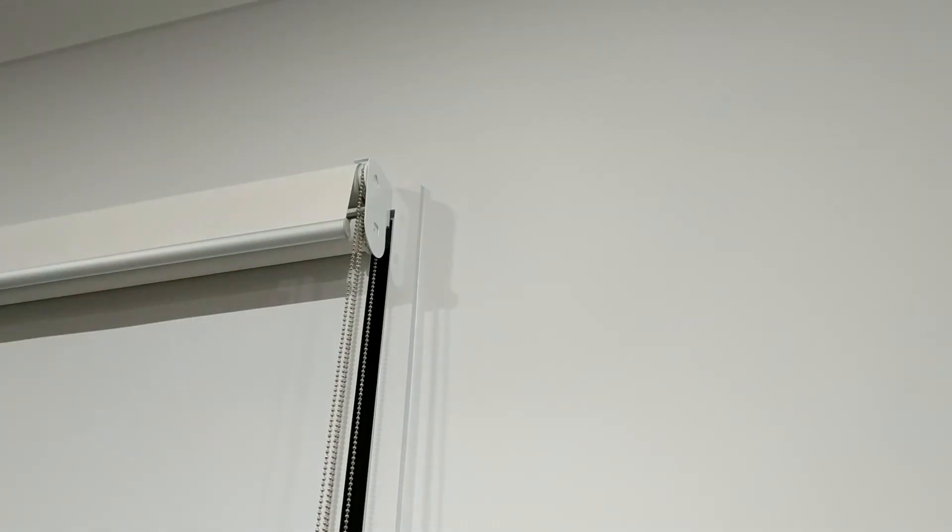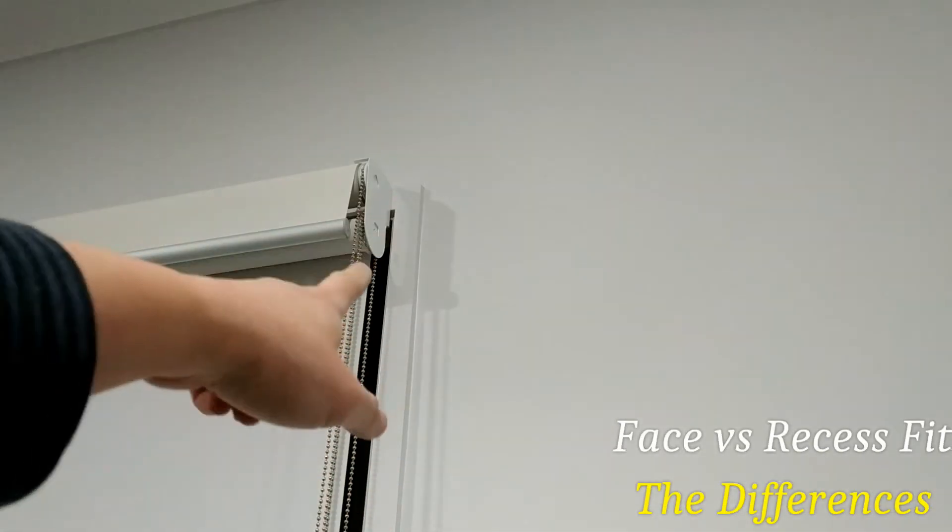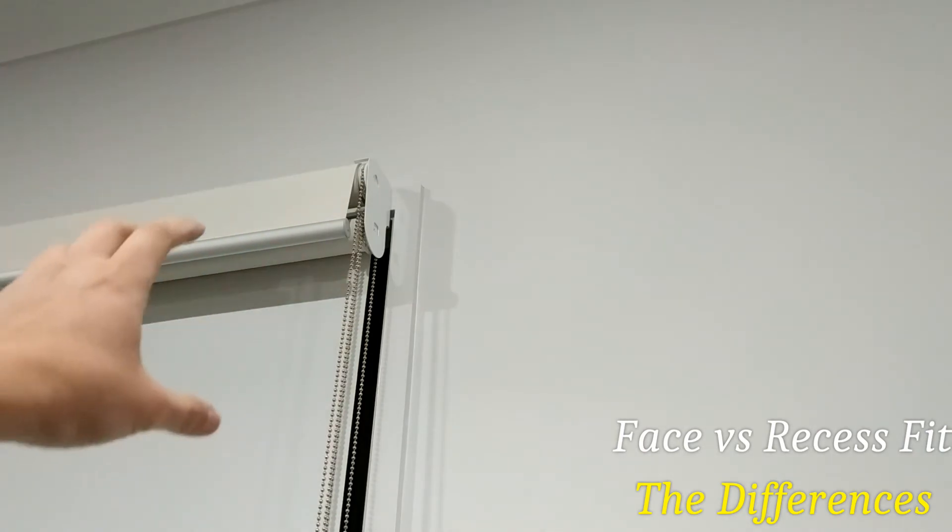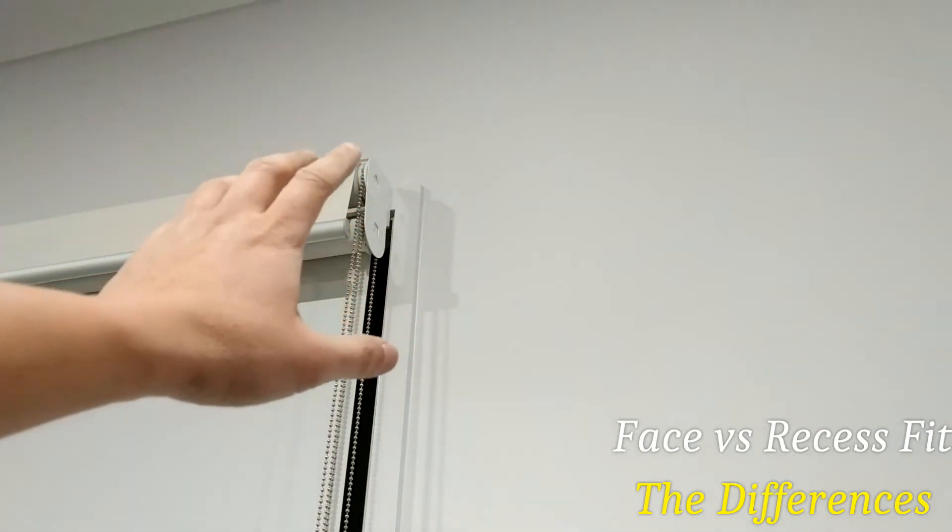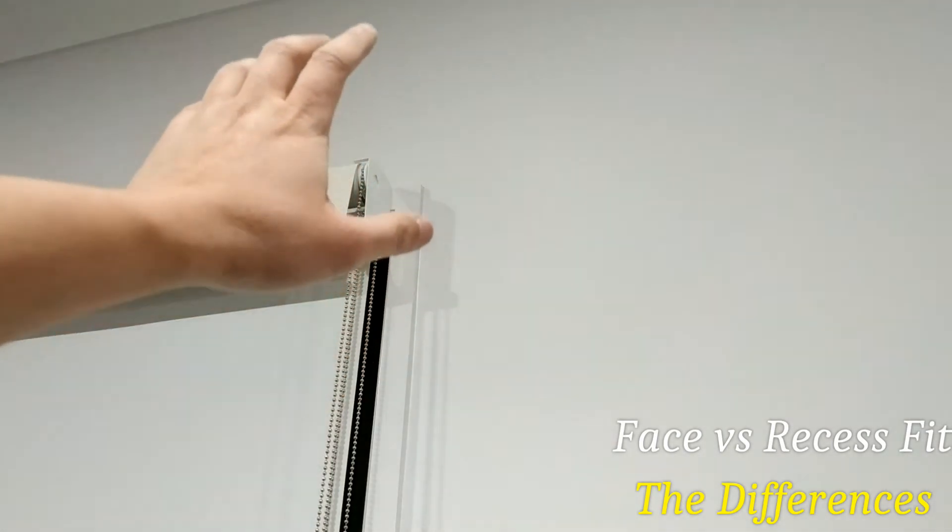So the second thing I want to talk about is the different ways of mounting the bracket. You see here the bracket that holds the blinds up. This one here is called a face mount, which means it's sitting on the face of the window frame.